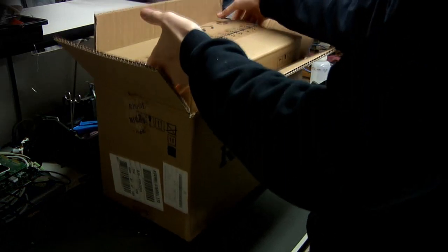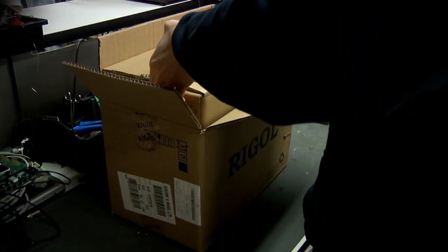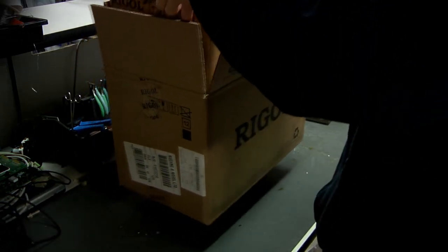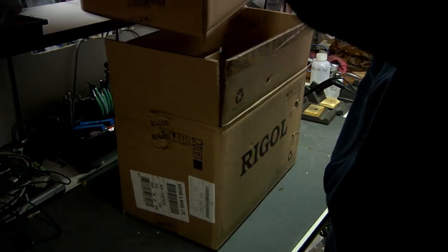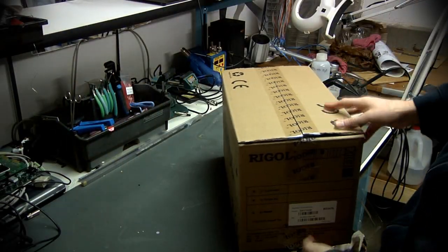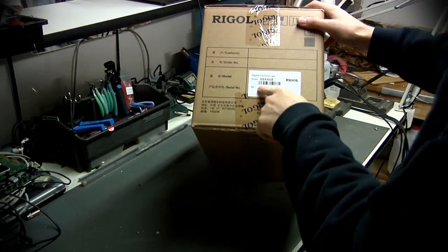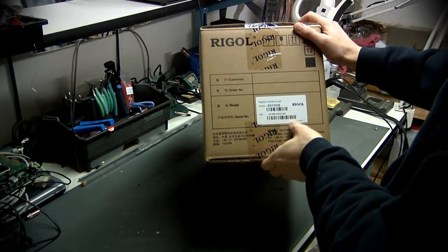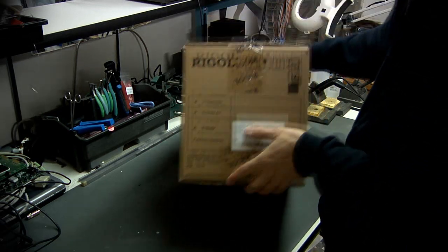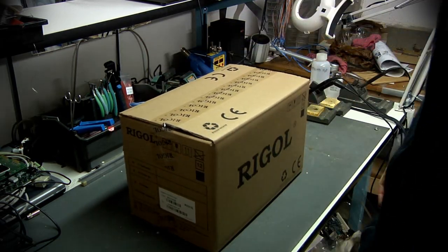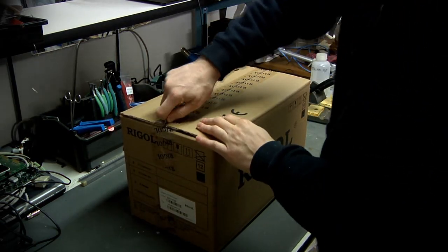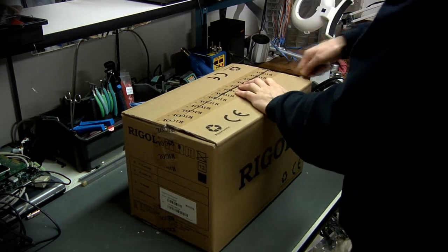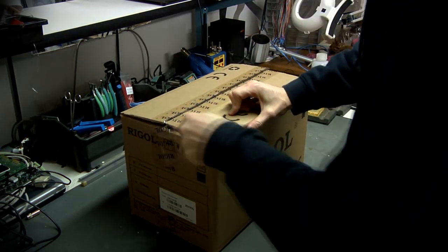So it was shipped pretty well. The outer box was actually an original Rigol box and it is in fact double-boxed, a little bit of damage there. It's got the right model number here on the side, it says DS1102E, made in China as you would expect. Pop this open, it all looks like it's factory sealed with the original tape.